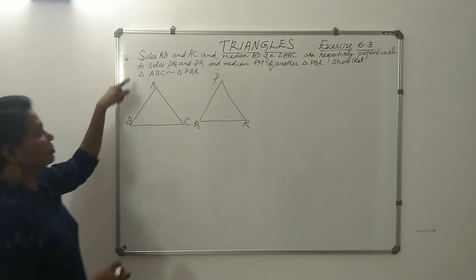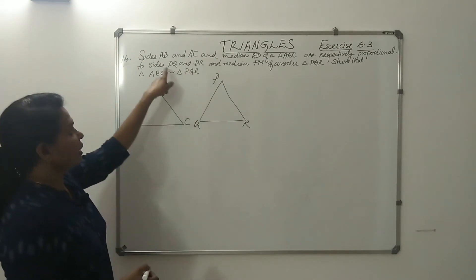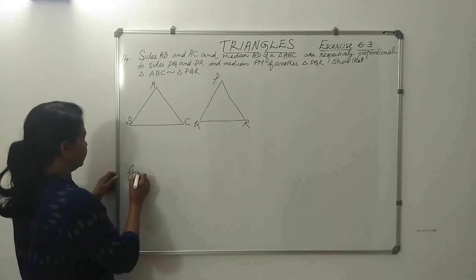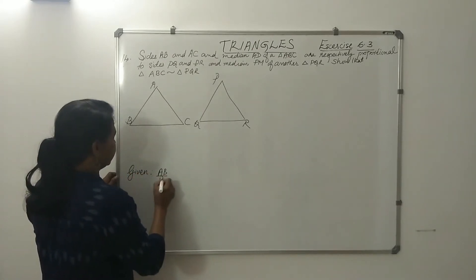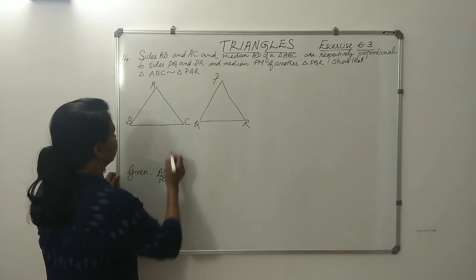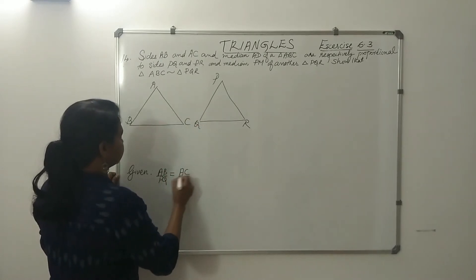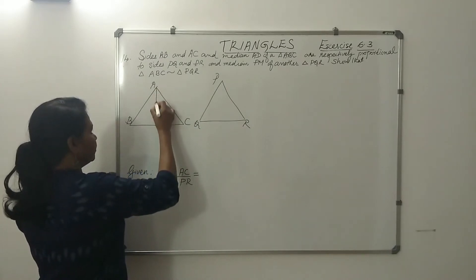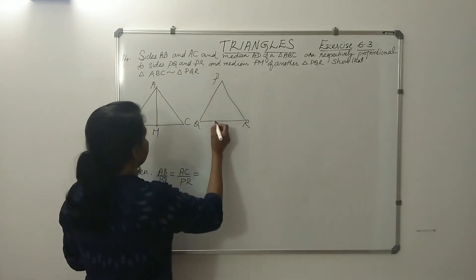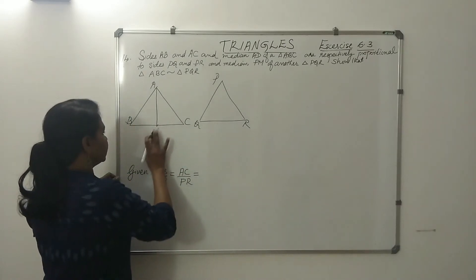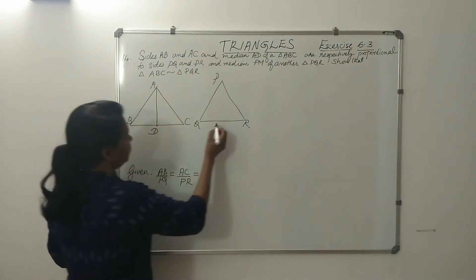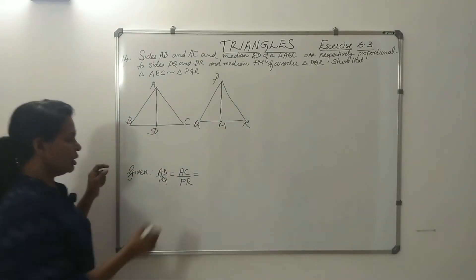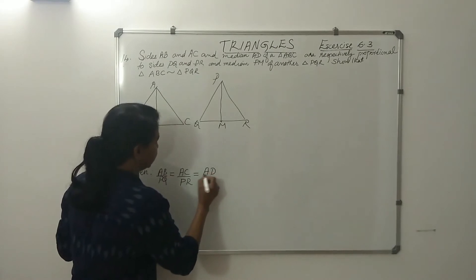This triangle is given: AB by PQ. So, given is AB divided by PQ equal to AC divided by PR. That is equal to the median — AD and PM are medians — that is also proportional to AD divided by PM.